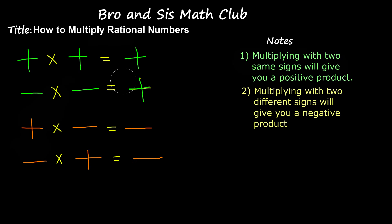So, when you multiply two integers with the same signs, you will get a positive product. When you multiply a positive number by a positive number, you will get a positive answer. And when you multiply a negative number by a negative number, you will also get a positive answer.